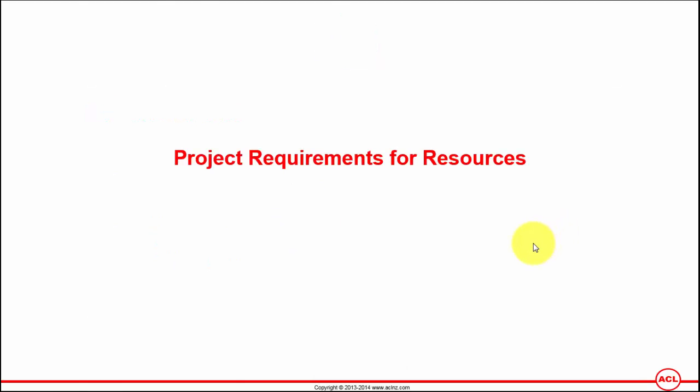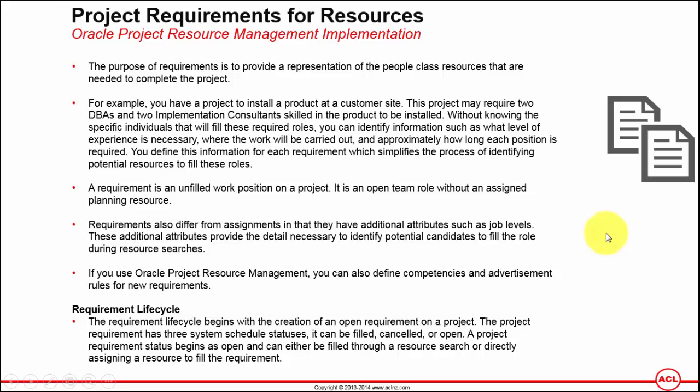Project requirements for resources represent the people classes needed to complete the project. As an example, when a new project is scoped, it is envisaged that there will be one project manager, one project coordinator, a couple of consultants to deliver — for an Oracle ERP implementation, a couple of functional consultants, a couple of technical consultants, one integration architect, one database administrator, and so on. What you are identifying here are the roles and the potential skills, experiences, and competency levels associated with those roles.